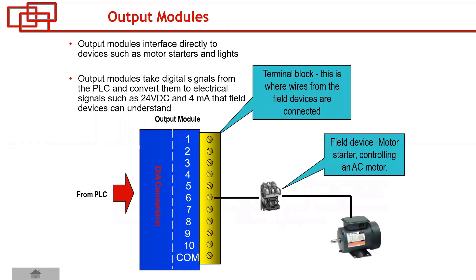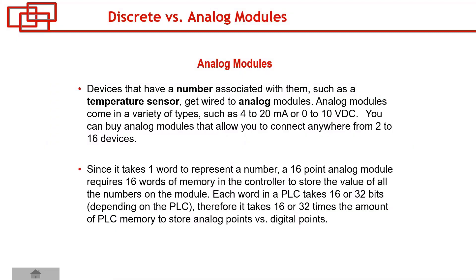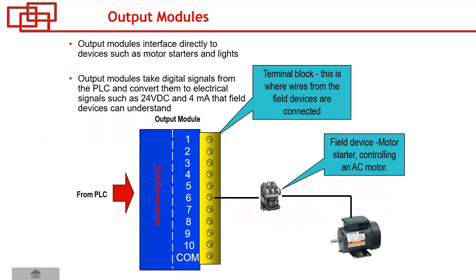Can you summarize why we need an output module, referencing the reason we need an input module? The input module receives signals from the field; the output module is needed for the PLC to send commands and direct actions. The PLC logic is digital — it's zeros and ones — and to send a signal to the field it needs to be converted, whether it's 24V DC, a dry contact, or a 4–20 mA signal. So it needs to be converted from digital to analog — digital to the standard electrical signal. That's the right description.